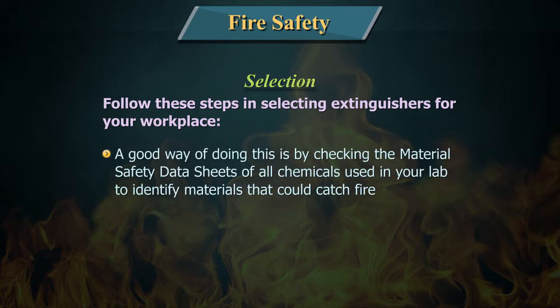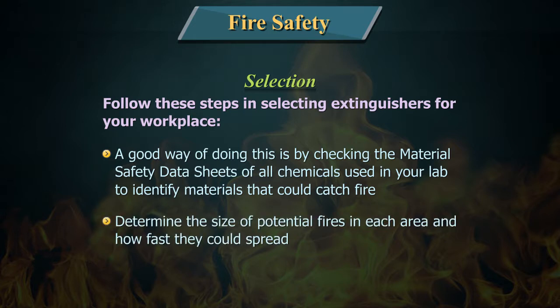A good way of doing this is by checking the material safety data sheets of all chemicals used in your lab to identify materials that could catch fire. Determine the size of potential fires in each area and how fast they could spread.